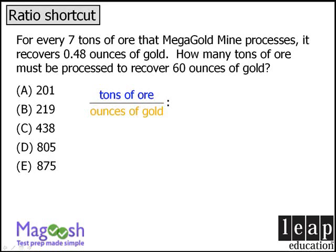The question tells us that for every 7 tons of ore processed, we can recover 0.48 ounces of gold. We want to know how many tons of ore must be processed to produce 60 ounces of gold, so we'll set up our equivalent ratio as x tons of ore compared to 60 ounces of gold.